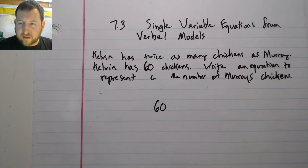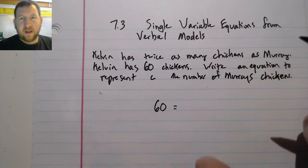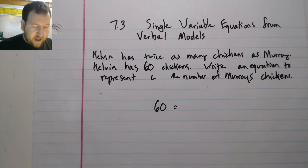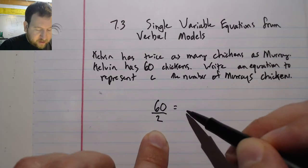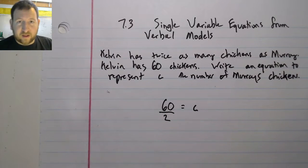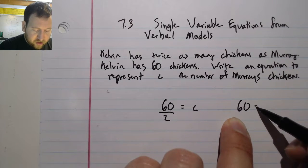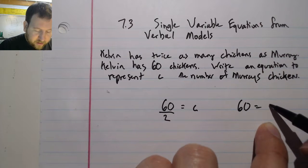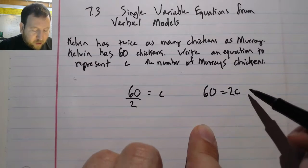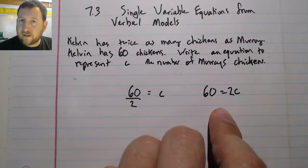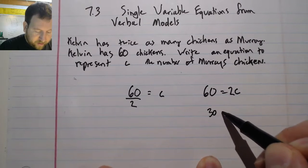So what I can do in this case is I can say, well, half as many is the same as if I said that Kelvin has twice as many. So I could write this in a couple of ways. I could write this as 60 divided by 2 equals C for the chickens. Or I could write this as 60 chickens total equals Murray's chickens times 2. Both of these would be an equation that I could then solve, which would be fairly easy for me to solve. And I could get to my answer that Murray has, in fact, 30 chickens.